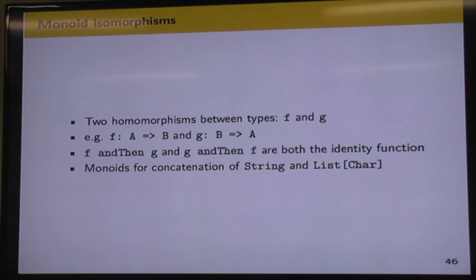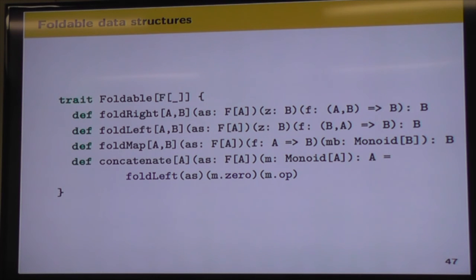And following on from that, we have monoid isomorphisms. So if we have two homomorphisms between types, so our functions f and g, f is from type A to B, and g is a function from B to A. And then if the composition of f and g is the identity function, and so is the composition of g and f, then we can form a monoid isomorphism. So an example here is concatenation for strings and for lists of characters. So we can go from a list of characters to a string, concatenate them, and then go back to a list of characters, and that's the same result.